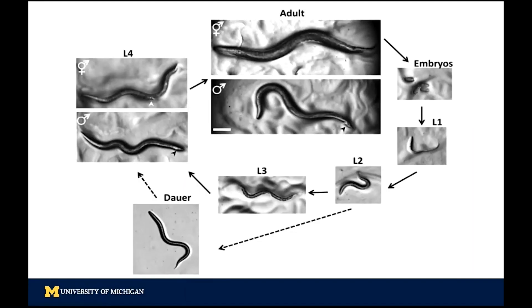There are several advantages for using C. elegans in research. First, they have a very rapid life cycle. It only takes 3 days for worms from an egg to an adult. This makes our experiment a lot faster to process.